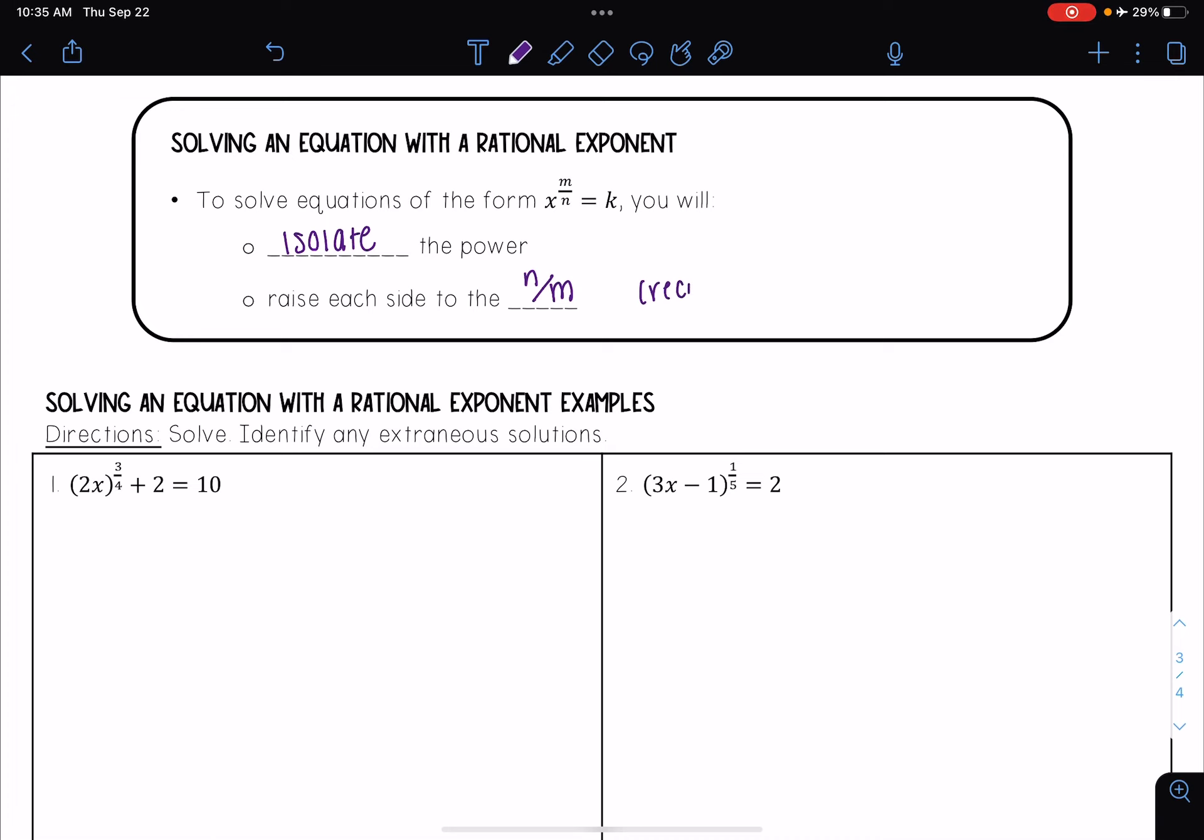In other words, the reciprocal of the exponent. The reason why we do that is because when you take the reciprocal and multiply it, you end up with 1.